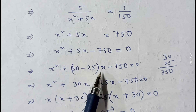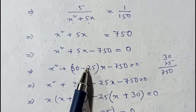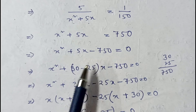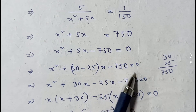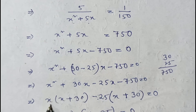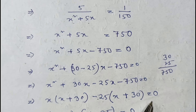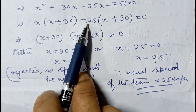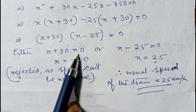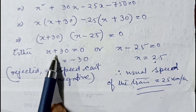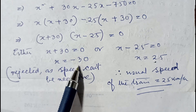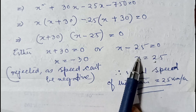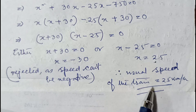Factorizing: x(x plus 30) minus 25(x plus 30) = 0, so (x plus 30)(x minus 25) = 0. Either x = minus 30 or x = 25. Since the speed of the train cannot be negative, x = minus 30 is rejected. Therefore the usual speed of the train is 25 kilometer per hour.